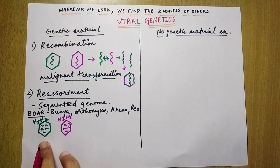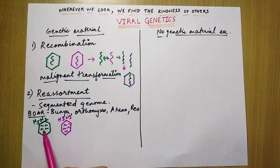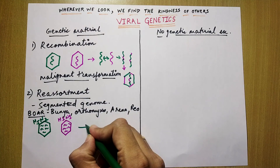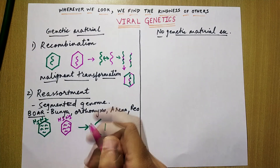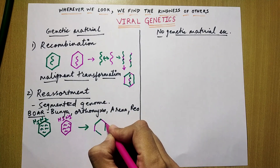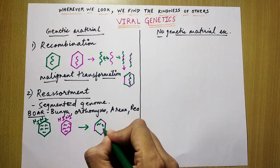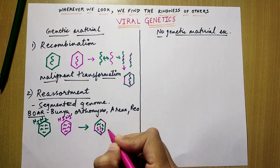Now when the virus enters the cell, it opens up all its genetic material and some segmented genomes are exchanged between both of them. For example, this segmented genome will pass into this one and here the segmented genomes will go into another virus. And the new virus that is formed will again have characteristics of both of them. This is reassortment.